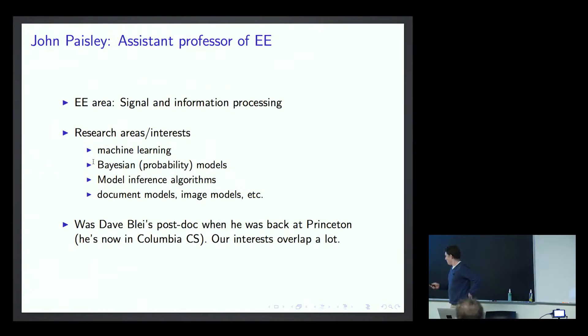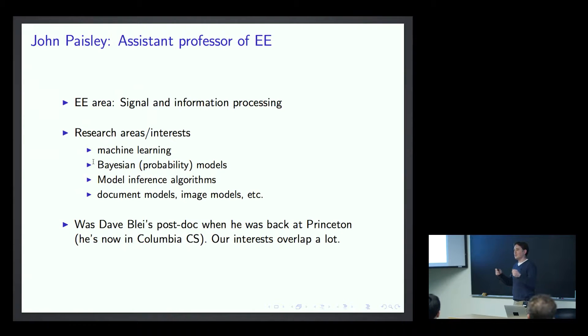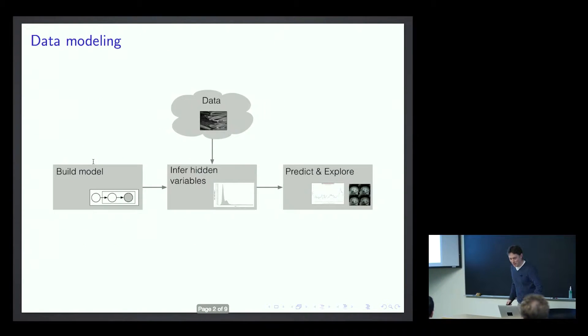Okay, so here's one slide summary. Basically, the key thing is that I was Dave Blei's postdoc back when he was at Princeton, and now he came to Columbia. I think there's quite a bit of overlap, but he's in CS and I'm in EE, so I feel okay about that. I'm like a smaller version of Dave Blei.